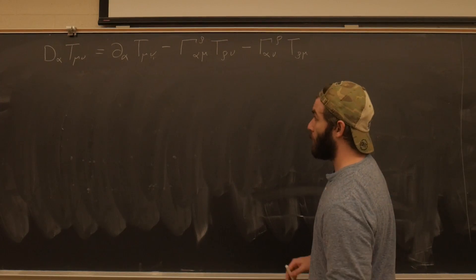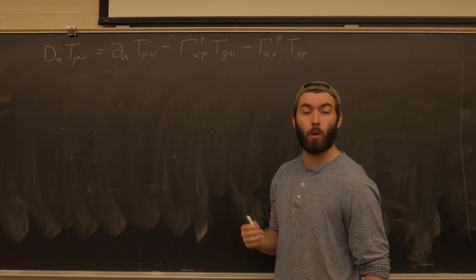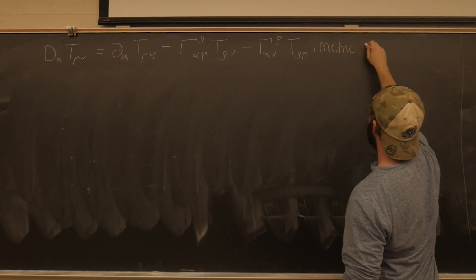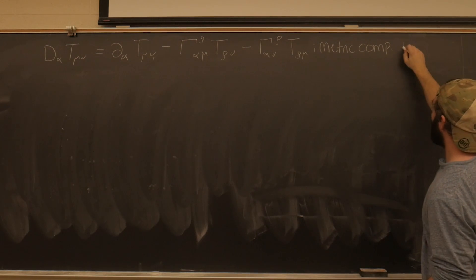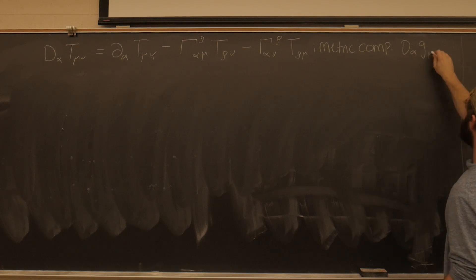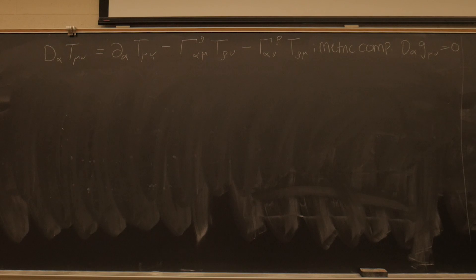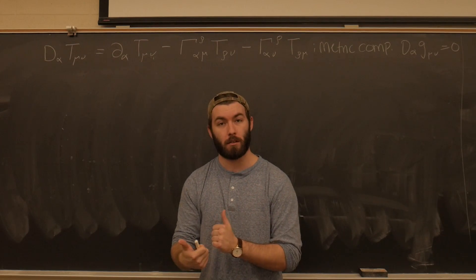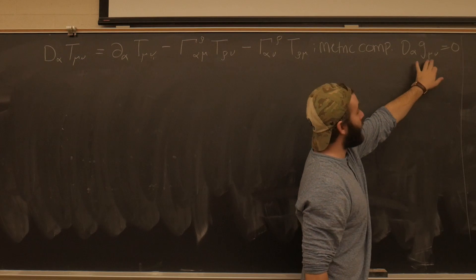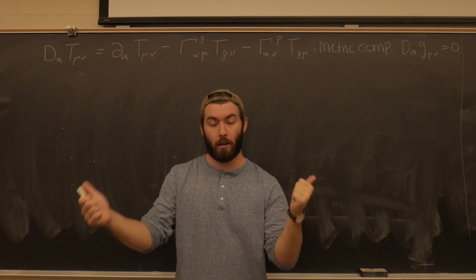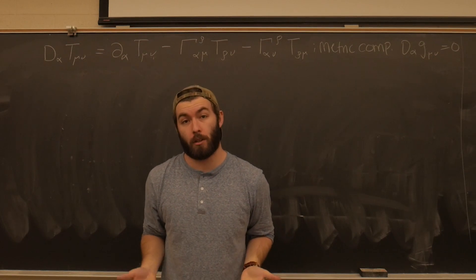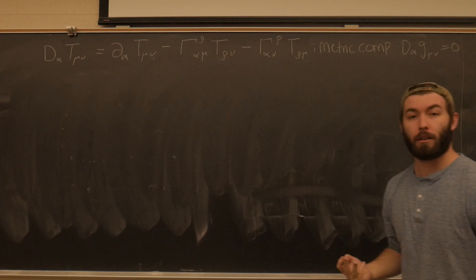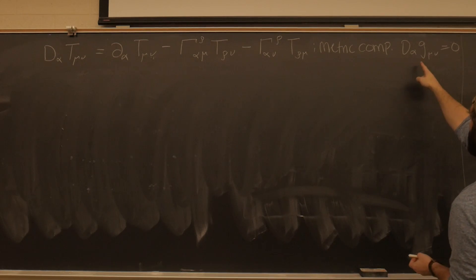The additional constraint that we're going to impose that'll allow us to uniquely solve for these connection coefficients is known as metric compatibility. What that means is that the covariant derivative of the metric G_mu_nu should be equal to zero. Why should it be equal to zero? In some sense it's a choice, but the way I like to think about it is locally you think of the metric in terms of the dot products of the basis vectors. So we have a derivative of a dot product, a derivative of a scalar product. It's just saying that when we parallel transport the basis vectors, the dot product is left unchanged. So this is something we're going to impose, and we're going to do it three times — three permutations of this condition, all equal to zero.